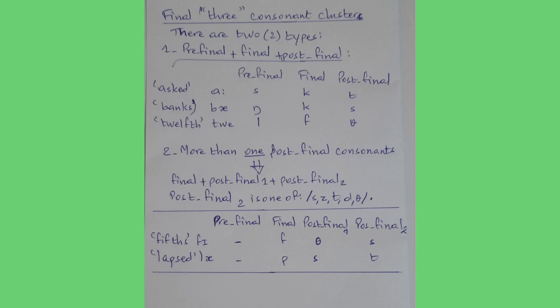Number two: more than one post-final consonant — final plus post-final one plus post-final two. Post-final two is one of /s/, /z/, /t/, /d/, or /θ/. Examples: 'fifths' — final /f/, post-final one /θ/, post-final two /s/. In 'lapsed' — final /p/, post-final one /s/, post-final two /t/.